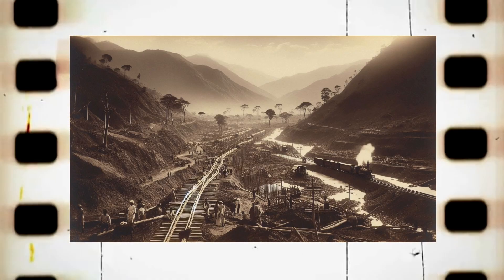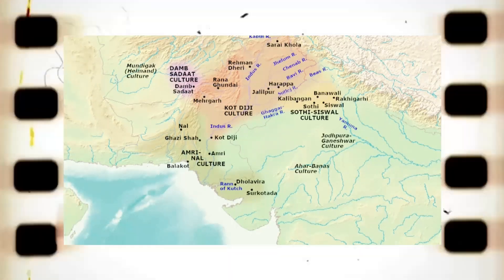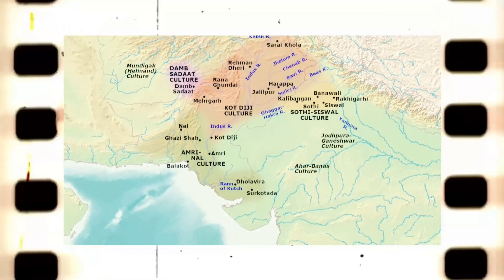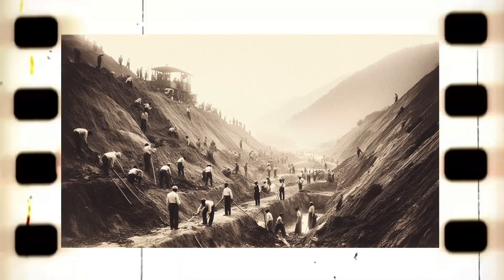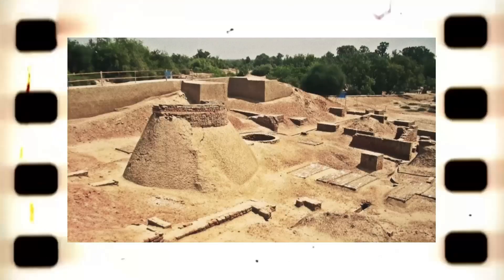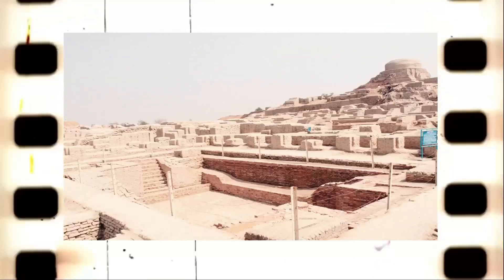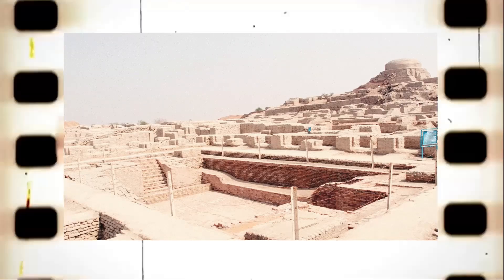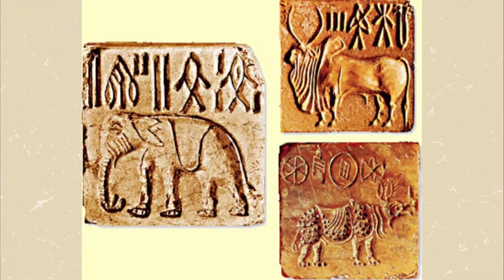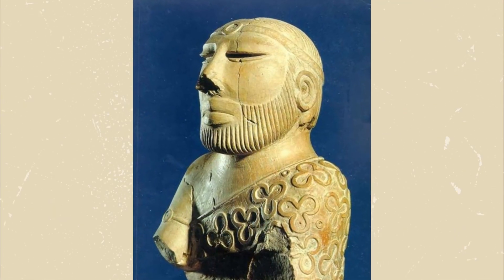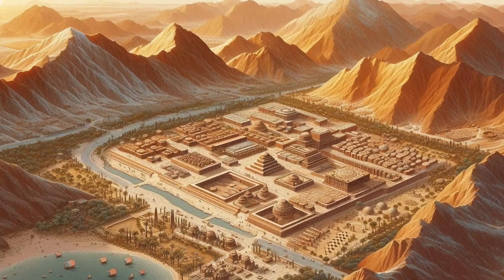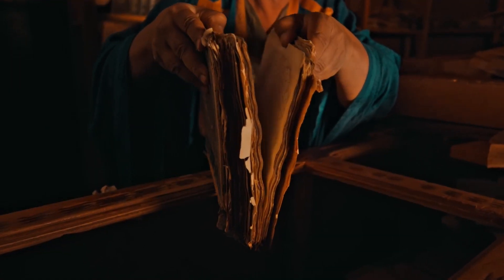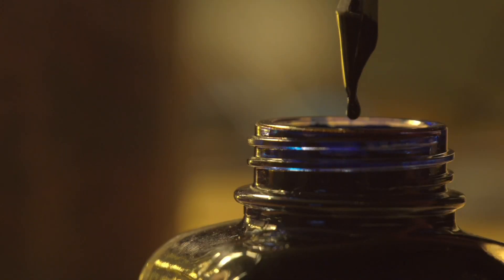It's the early 1900s, and engineers are hard at work building a train line in western India. To lay the tracks, they need mud — lots of it. So they start digging up small hills along the way, not thinking much of it. But some of those small hills weren't just ordinary piles of dirt. They were actually ancient mud domes hiding something incredible beneath them. As they dug deeper, they uncovered artifacts from one of the most important archaeological discoveries of all time: the Indus Valley Civilization. Sites like Mohenjo-Daro and Harappa emerged from the ground, revealing a whole lost world that no one knew existed.